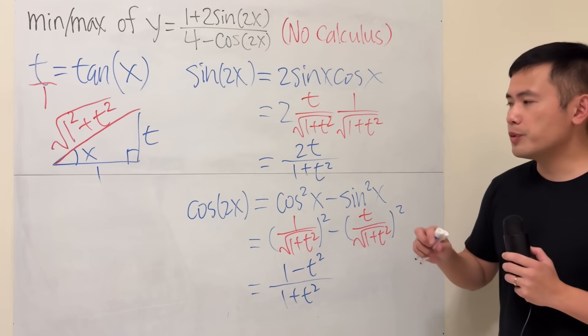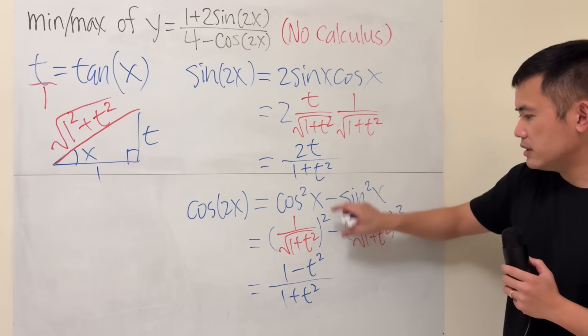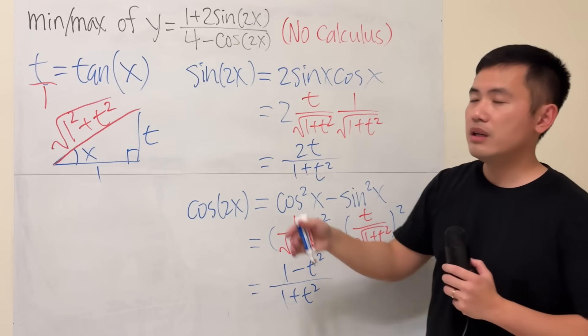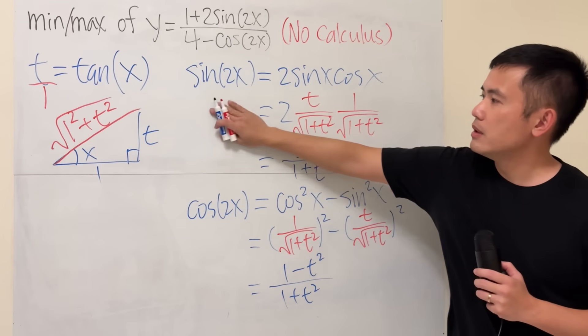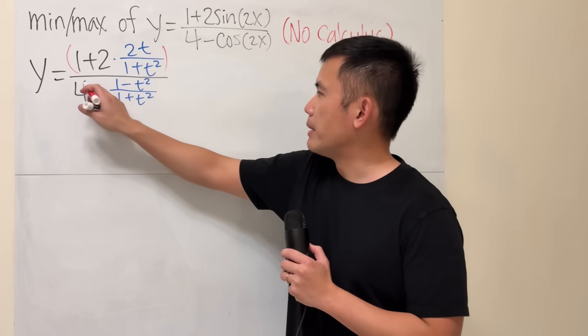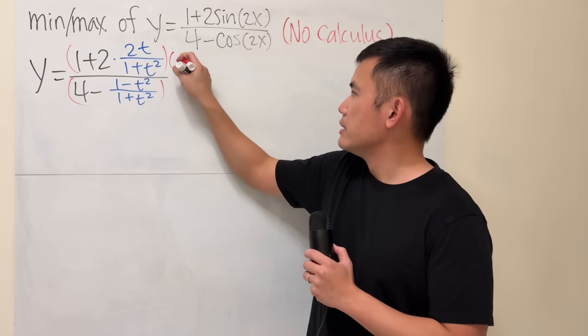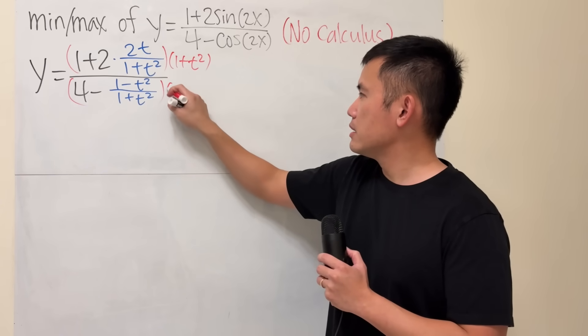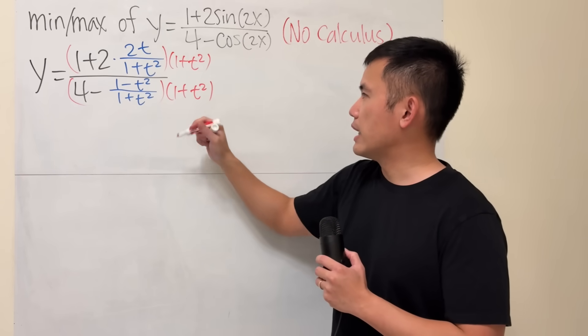Now, we're just going to be plugging this and that into here and here. And this is what we have. Right here. And then, let's just simplify this a little bit. I will multiply the top and bottom by this denominator.